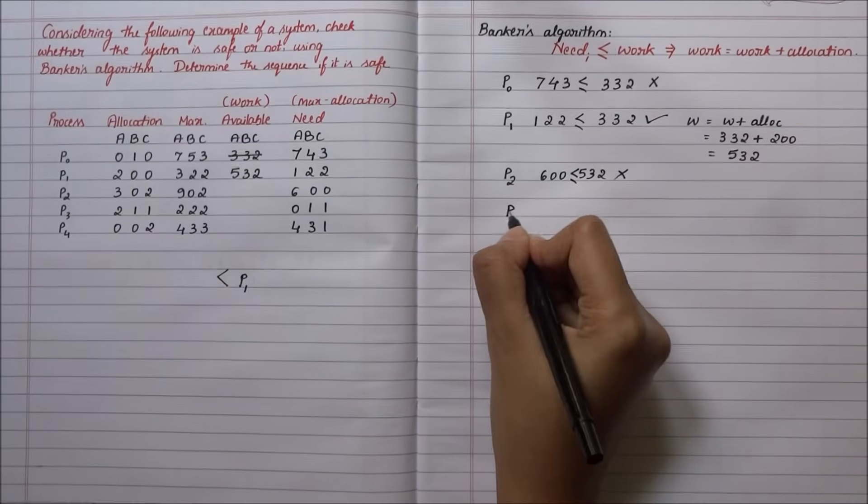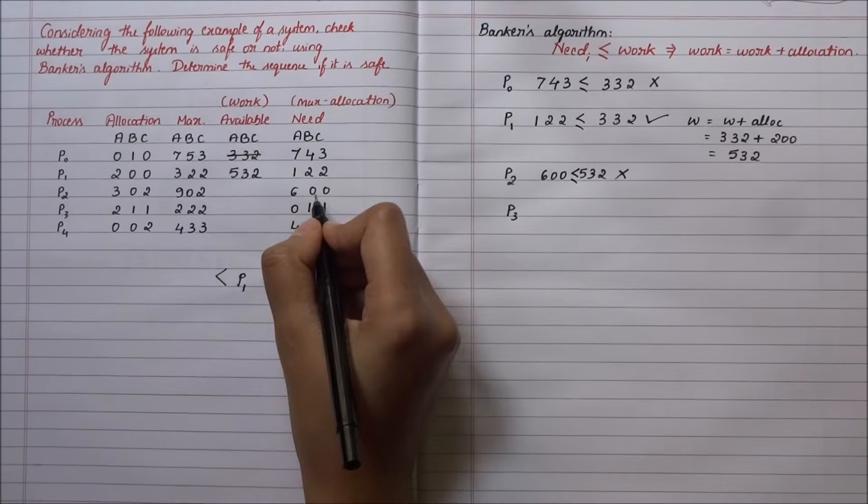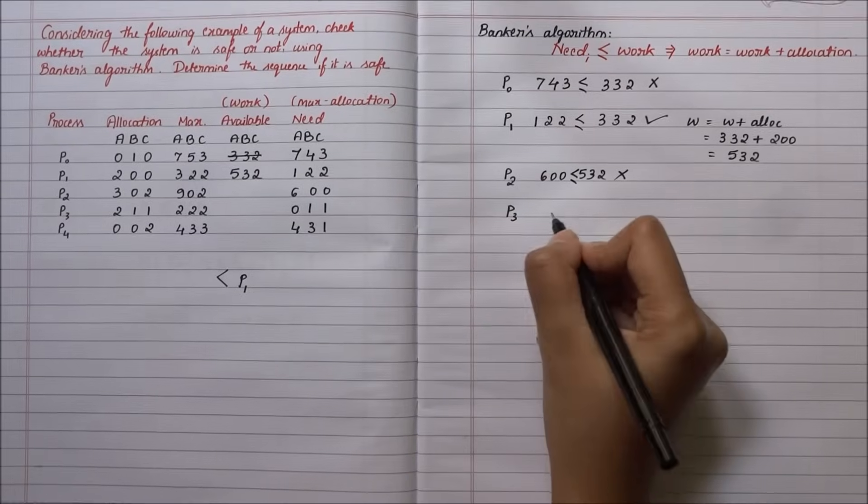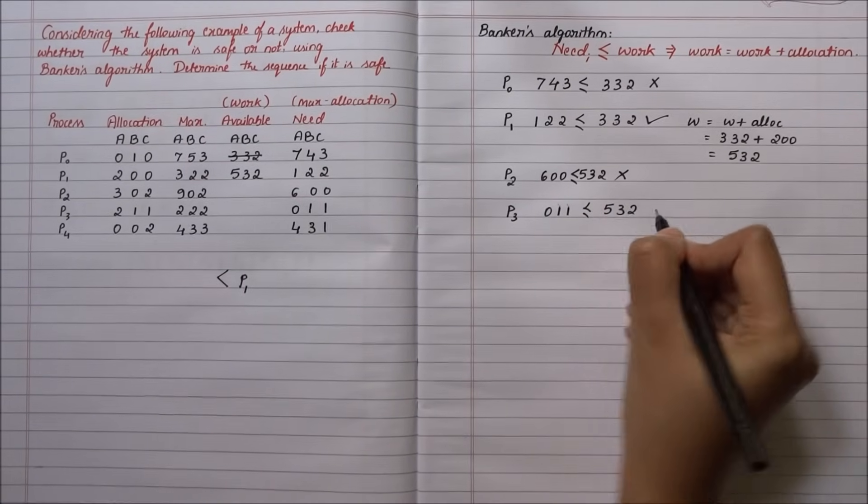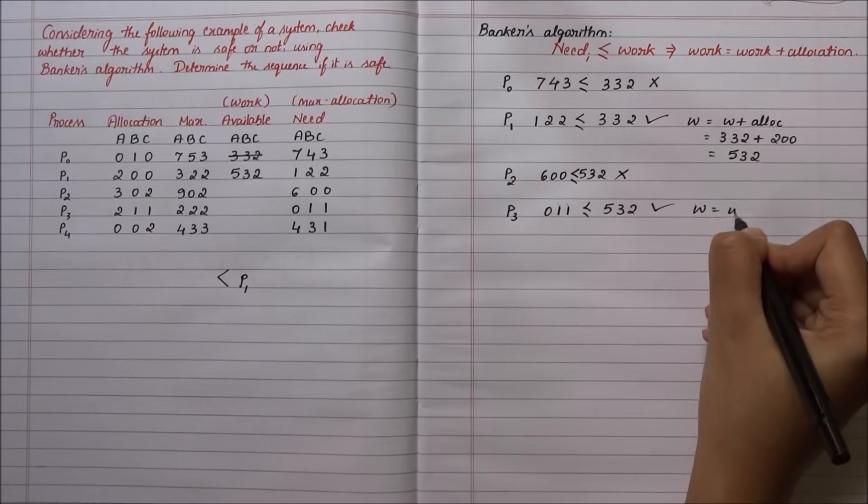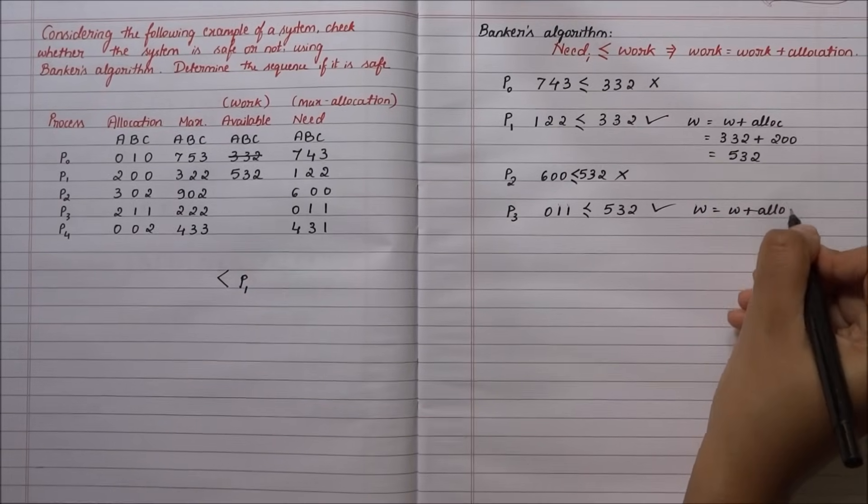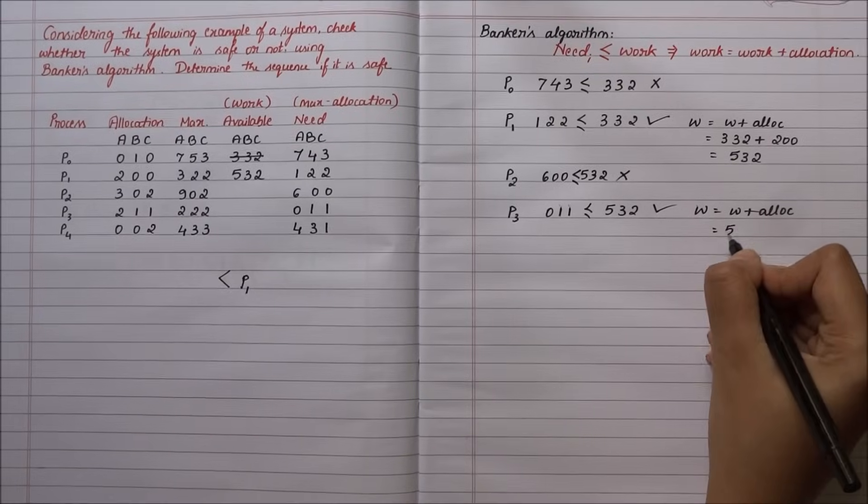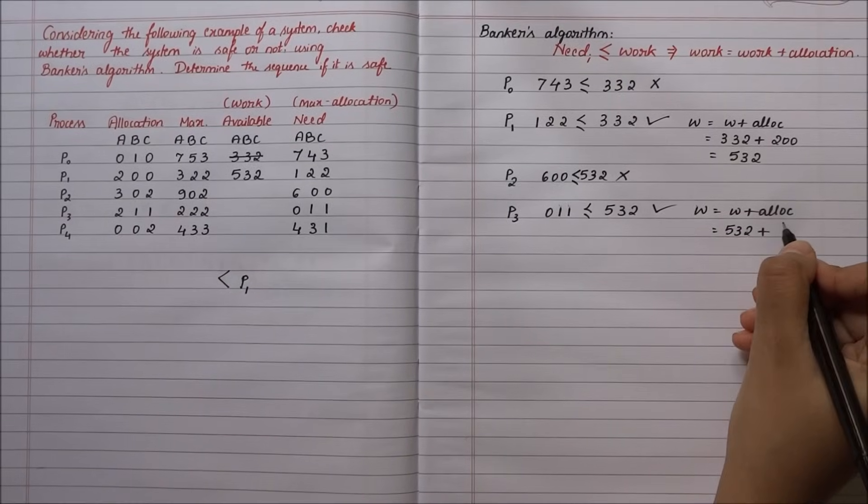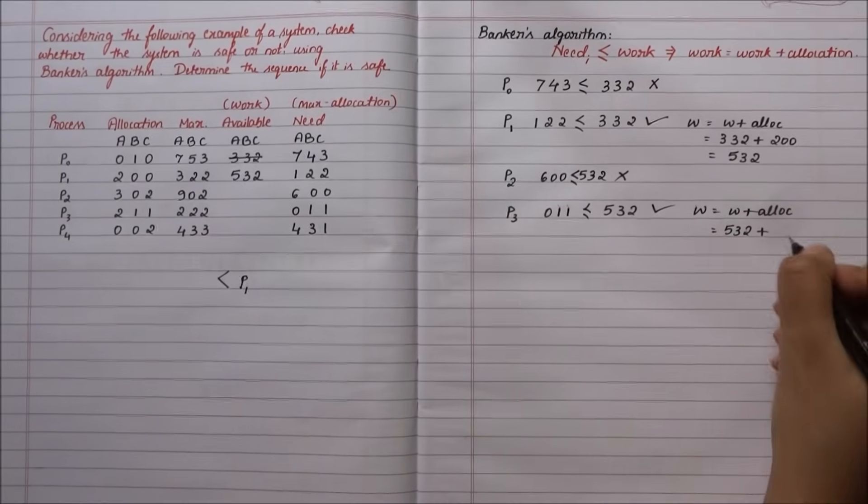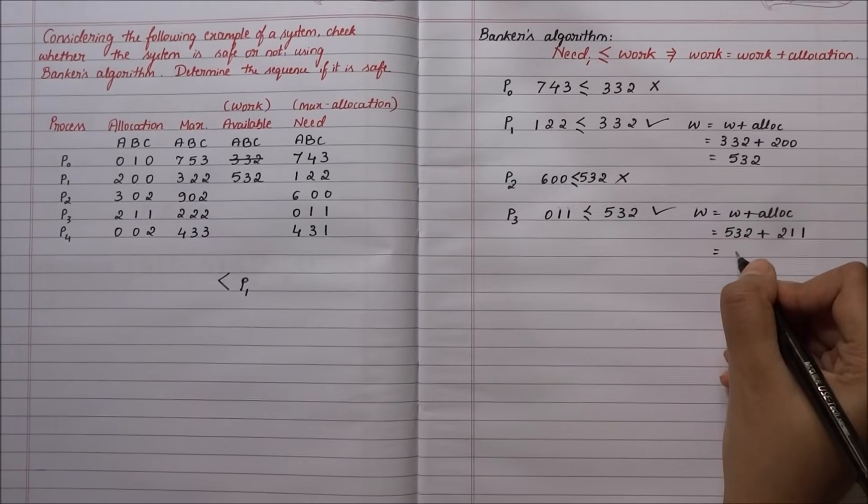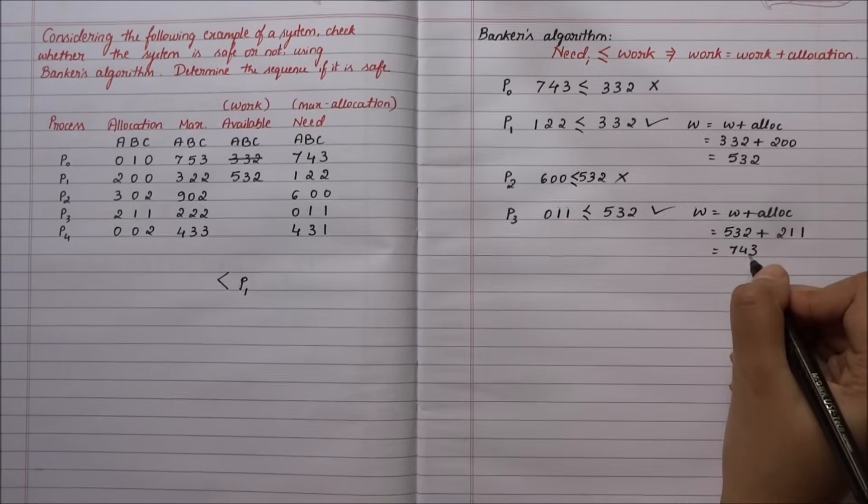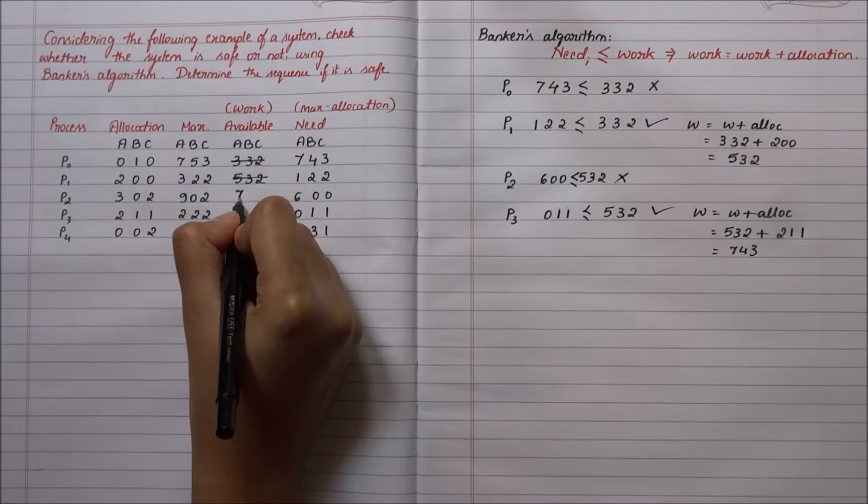Let me go to the next process P3 whose need is 0-1-1, less than or equal to 5-3-2. This is true. Work becomes work plus allocation: 5-3-2 plus allocation of P3, which is 2-1-1, totals 7-4-3. P3 has now entered the safe sequence.